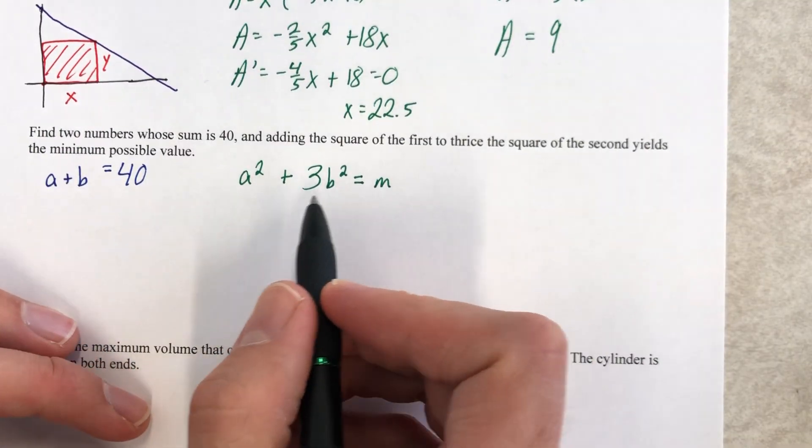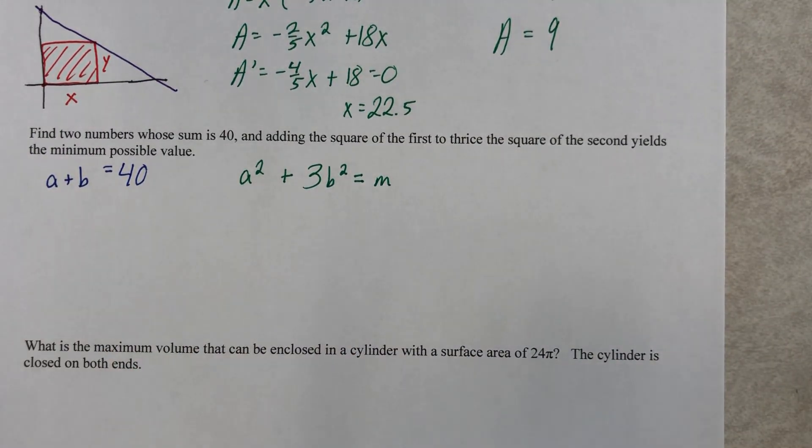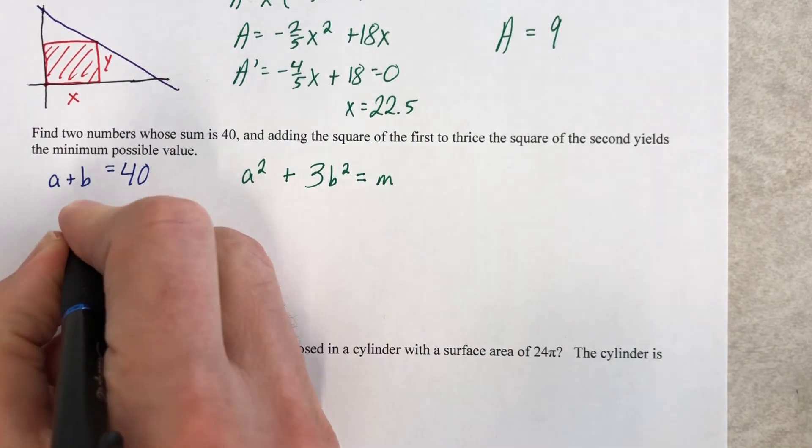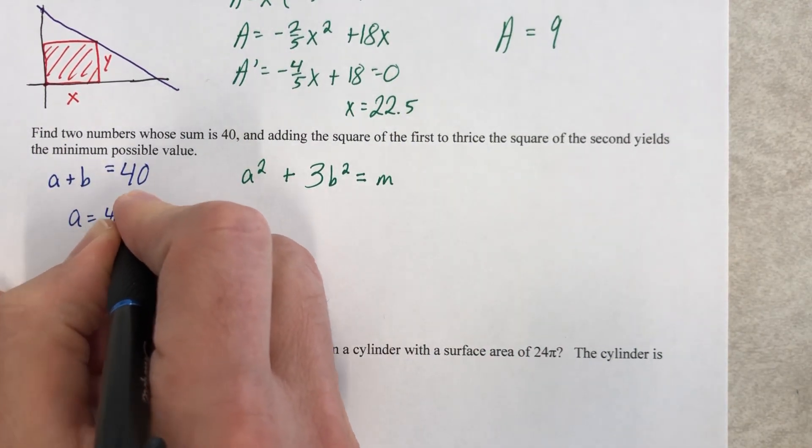We would love to take the derivative of this, but we have an A and we have a B and things get complicated and let's not. So let's not. What I am gonna do, however, is solve for one of these. Either one, it doesn't matter. I'm gonna solve for A because I feel like it. You're gonna get the same answer either way. A equals 40 minus B.